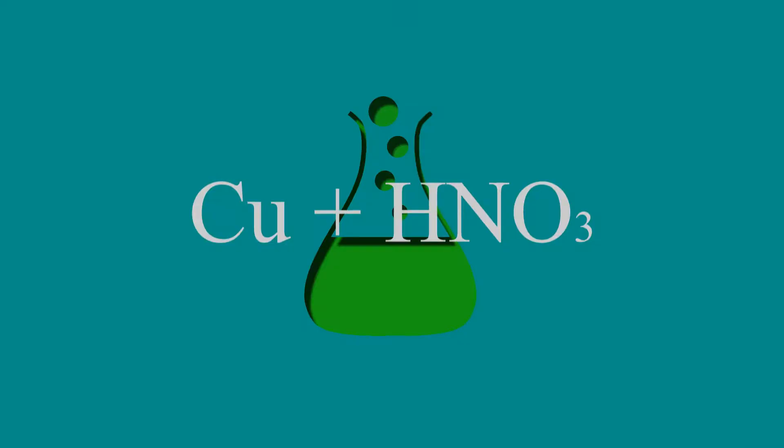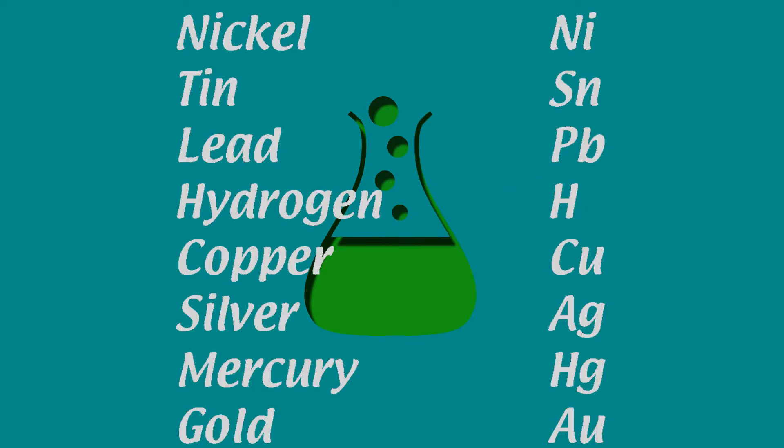In this case, our two reactants in question are copper and H plus ions. We can see that hydrogen is slightly more reactive than copper, so based solely on general reactivity trends, we can predict that copper will not react with nitric acid.